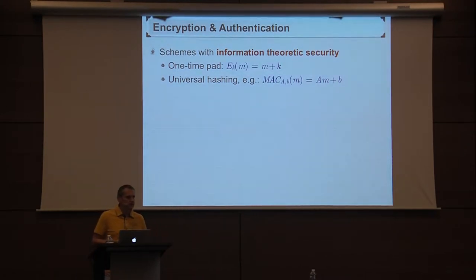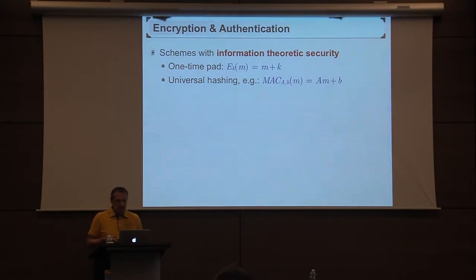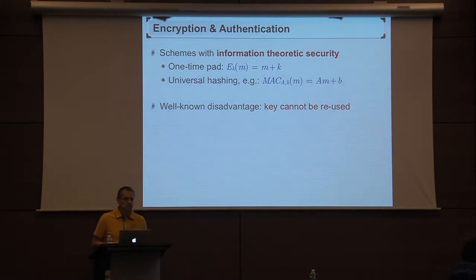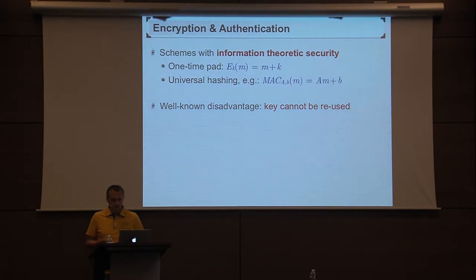The typical examples are the one-time pad for encryption and universal hashing for authentication. Now, the well-known downside of these kinds of schemes is that the key cannot be reused. In a one-time pad, you can only use your key once — that's why it's called the one-time pad. In general, you can only use the key a bounded number of times for these information-theoretically secure schemes.